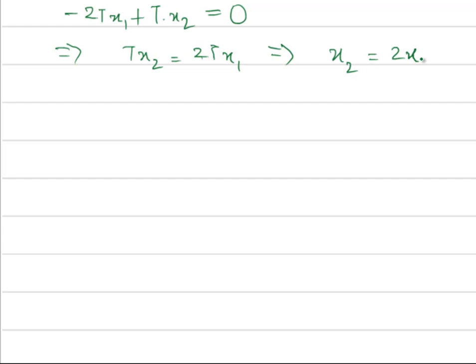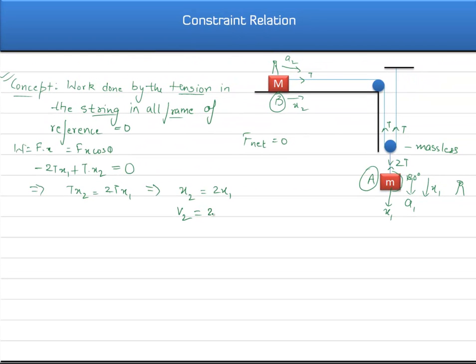Now if we differentiate this equation with respect to t we will get v2 will be equal to twice of v1, where v2 will be the velocity of block B and v1 will be the velocity of block A. Again we can differentiate, we will get a2 equals twice of a1. So here we can easily get the relation between the accelerations of the two blocks.